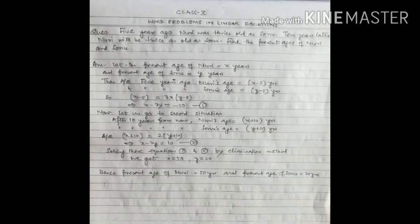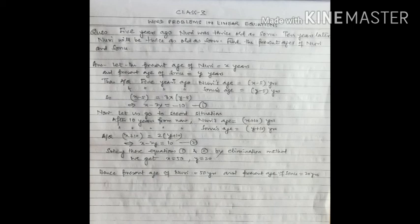The second condition is about the situation after 10 years. After 10 years, Noori's age will be x + 10 and Sonu's age will be y + 10. According to the question, Noori will be twice as old as Sonu, so x + 10 = 2(y + 10). Simplifying gives our second equation: x − 2y = 10. Using the elimination method on equations 1 and 2, we get x = 50 and y = 20.